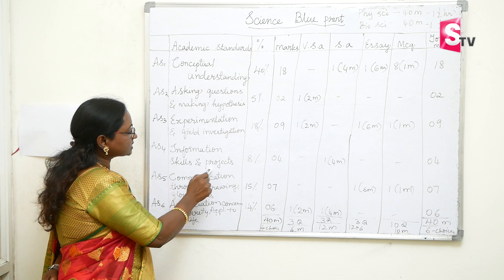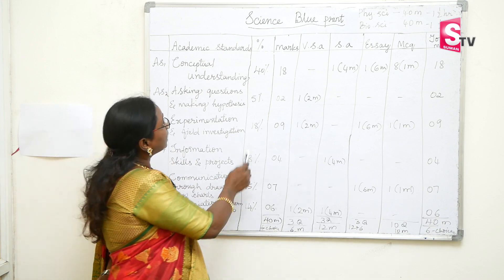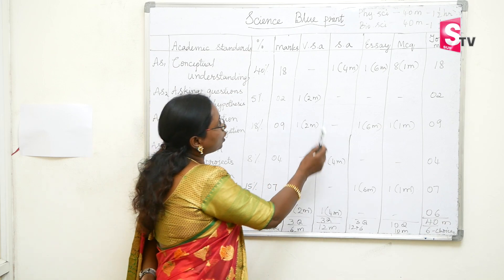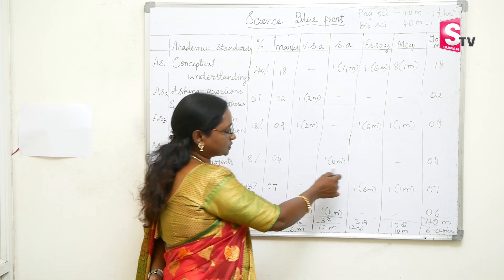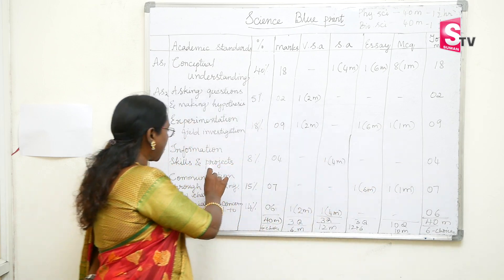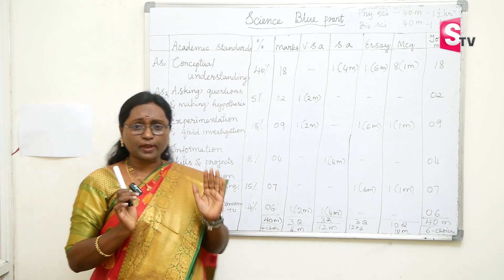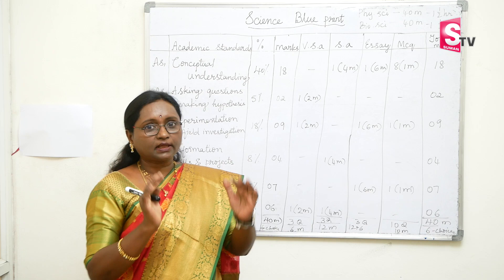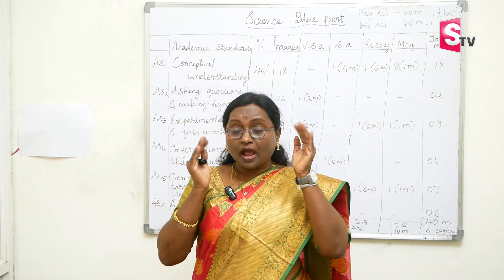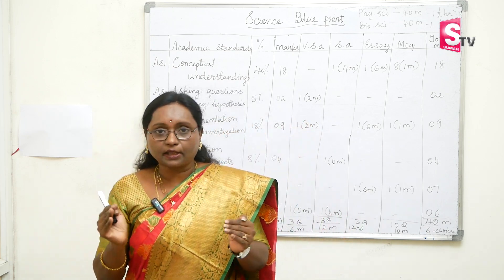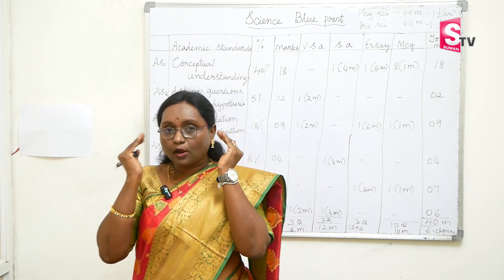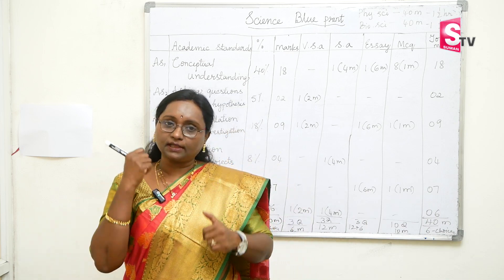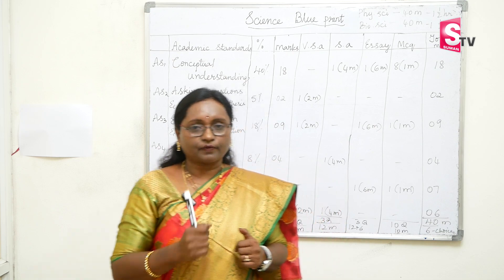The fourth standard — information skills and projects — covers 8% of the paper with a total of 4 marks, with one short answer question. In information skills questions, information will be given in the question itself, but you have to identify what concept is being asked. Use the relevant concept to attend to the information skill question correctly. This is one useful tip.